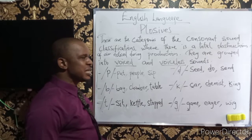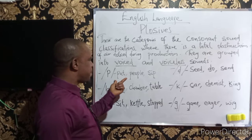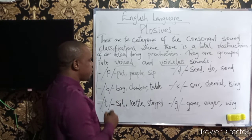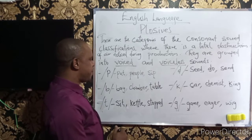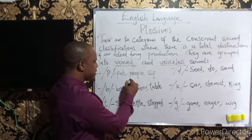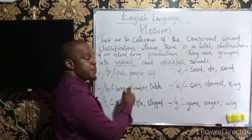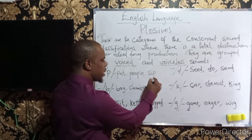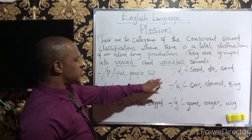The first one is sound /p/. For words like 'put', we have the sound obtained there. We also have it in 'people' — the sound appears at the beginning and again in the middle of 'people'. And we have it at the end of the word 'sip'.